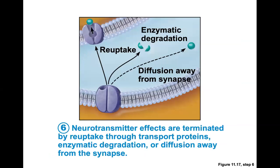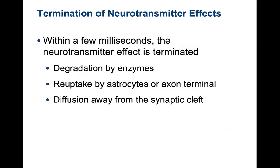Once the neurotransmitter has been released, a few things happen. Some of it will diffuse out of range. Most likely it will be degraded by enzymatic activity — this prevents prolonged signaling. Almost immediately after discharge by exocytosis from the axonal terminal, any neurotransmitter that has not bound to a chemically-gated channel will be degraded by enzymes. For continued signaling, another action potential must come down, causing depolarization and release of neurotransmitter from the axonal terminals. Termination of neurotransmitter effects occurs within milliseconds — by degradation by enzymes, reuptake by astrocytes or axonal terminals, or diffusion away from the synaptic cleft.